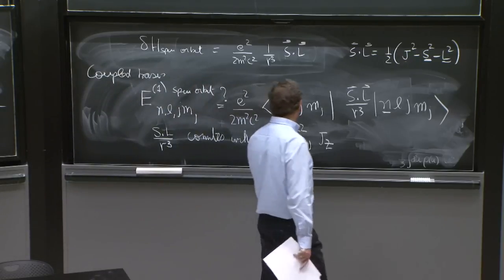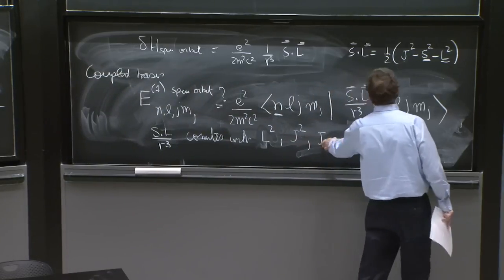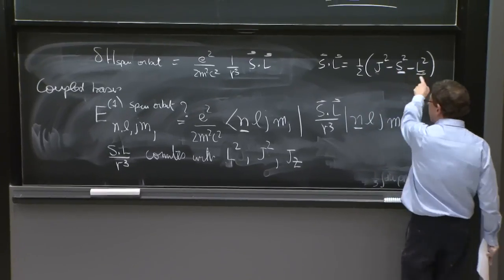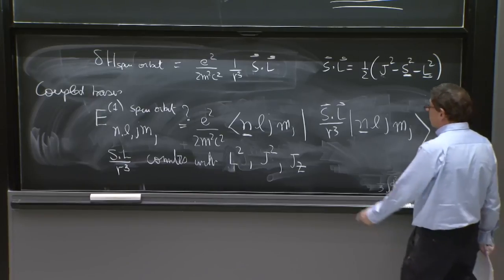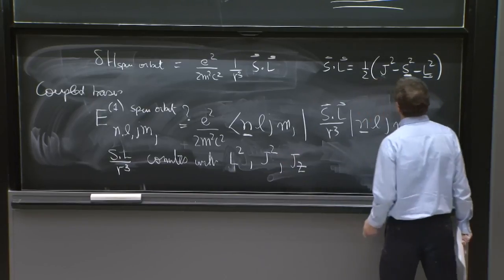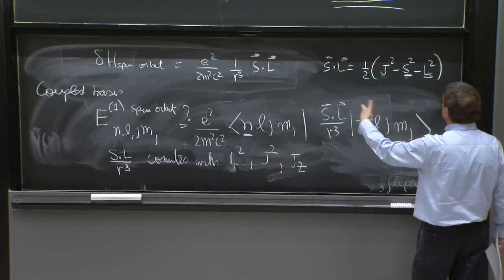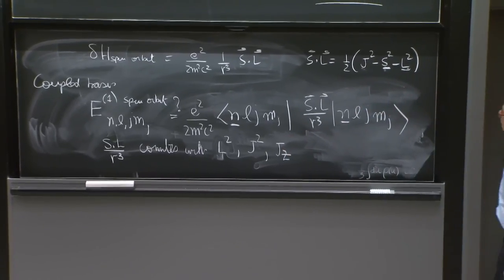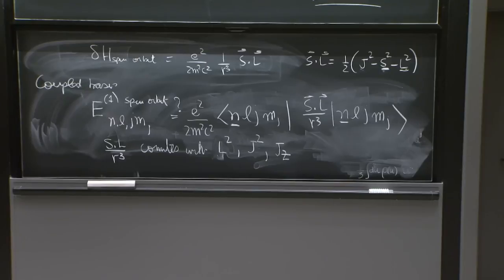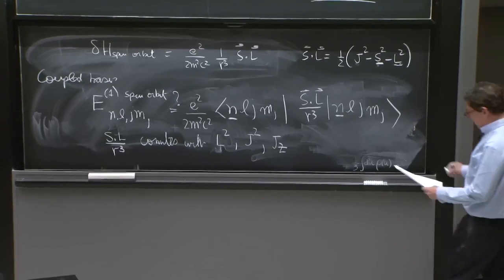In order to do the other ones, you can also think, in terms of this matrix, j squared, j squared over here, and s squared, and do all of them. You should do it, and convince yourself that they all commute. So we can do this.